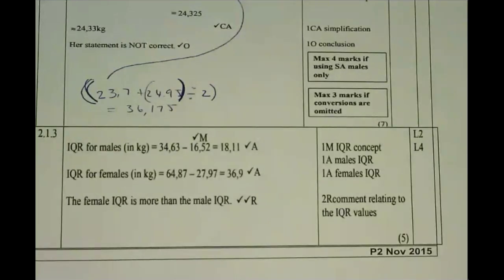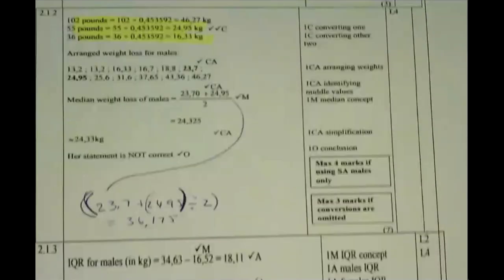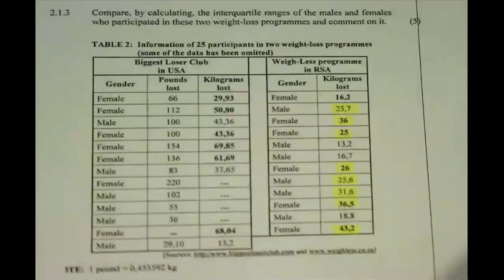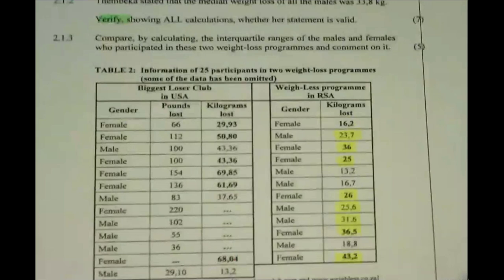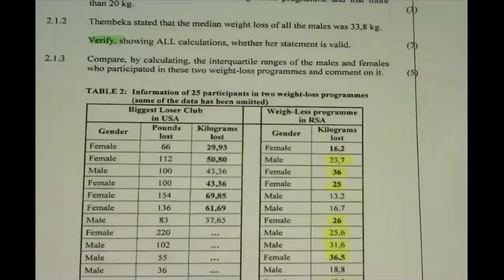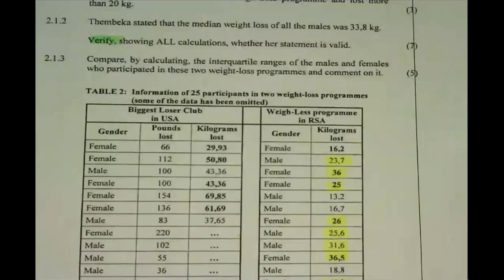Going back to 2.1.2 — the statement was that the median weight loss of all the males was 33.8 kilograms. The question asks to verify, showing all calculations, whether or not the statement is valid. This is about all the males — not just USA or just South Africa, but all the males. Looking at the table, you have quite a few male values, and you've got three male values that are blank with ellipses, meaning we need to work them out.